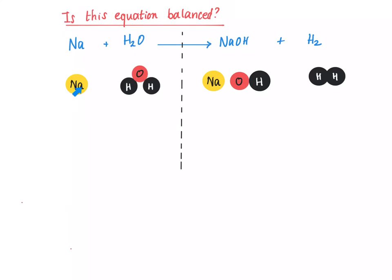We have one sodium on the left hand side and one sodium on the right hand side, so the sodiums are balanced. We have one oxygen on the left hand side and one oxygen on the right hand side, so the oxygens are balanced. But if we look at the hydrogens, on the left hand side we have two, but on the right hand side we have three. Because the hydrogens aren't balanced — there's a different number on the left hand side compared to the right hand side — this chemical equation is not balanced.